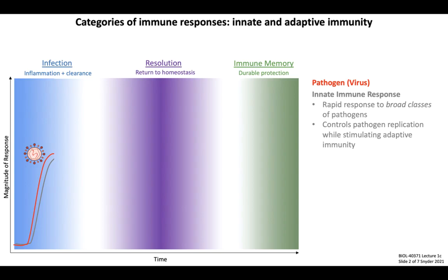Innate immunity rapidly employs several mechanisms aimed at restricting pathogen replication while simultaneously stimulating pathogen-specific adaptive immune responses. It's worth noting that for most microorganisms that successfully infect humans, innate immunity is often insufficient for pathogen control and clearance. So innate immunity, while triggered immediately following infection, typically requires the initiation of an adaptive immune response in order to successfully eliminate infection.